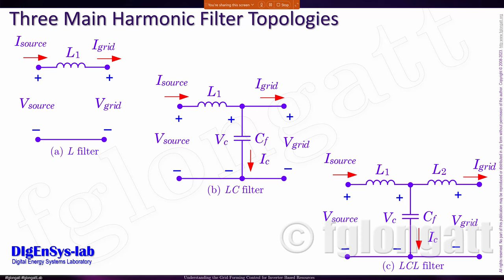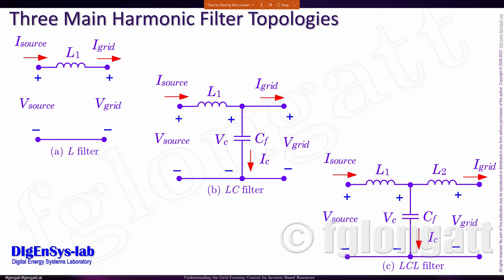Our colleagues from the power electronics area have already studied the different models we can use. If we consider a power electronic converter inverter connected to the grid, there are different types of filters, and those filters are designed to remove the harmonics created by the switching performance of the power converter. We can have the very simple L filter, the LC filter, and also the LCL filter. In this presentation I will not go into detail on the harmonics created by the power converters.